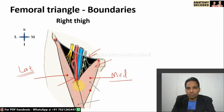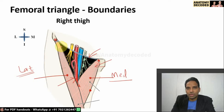The apex of the femoral triangle is formed in the region where the sartorius and adductor longus muscles meet.